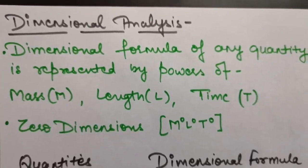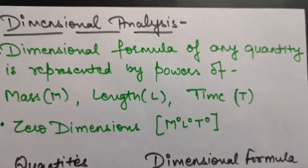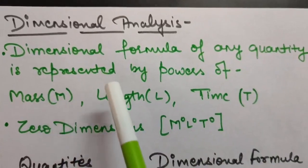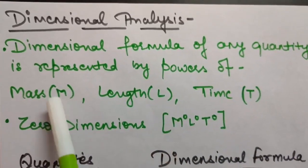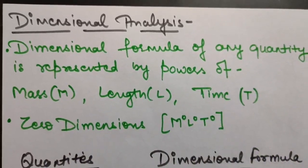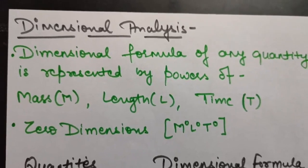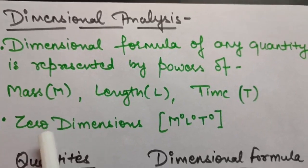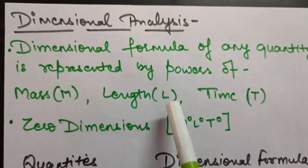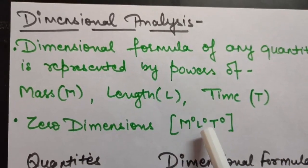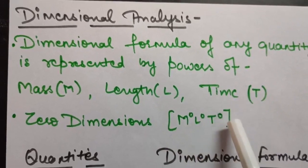The next topic is dimensional analysis. In dimensional analysis, we write down the dimensional formula of various quantities. The dimensional formula of any quantity is represented by powers of mass, length, and time — that is M, L, and T — and we give them some powers. That combination becomes the dimensional formula of that quantity. The dimensional formula is always enclosed in square brackets. If any quantity has zero dimensions, the powers of M, L, and T will all be zero — written as M⁰ L⁰ T⁰.